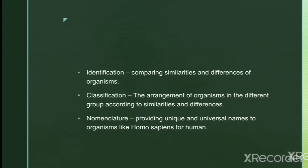Identification means we compare organisms according to their similarities and differences in morphological, anatomical, and genetical aspects. Classification means arranging organisms into different groups according to their similarities and dissimilarities, into groups and subgroups. Nomenclature means providing a unique and universal name to an organism — for example, Homo sapiens for humans. This universally accepted name is called binomial nomenclature.